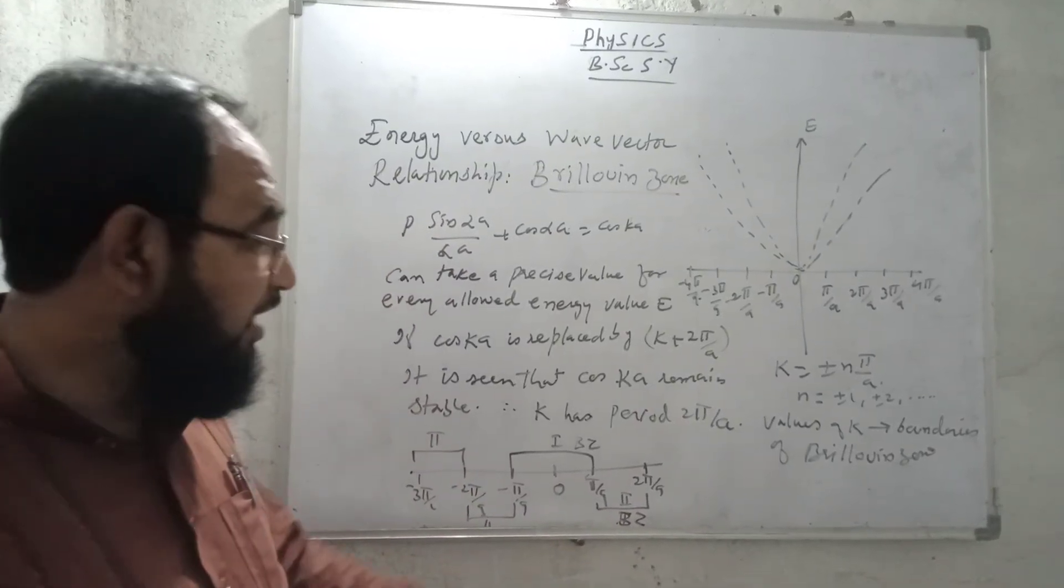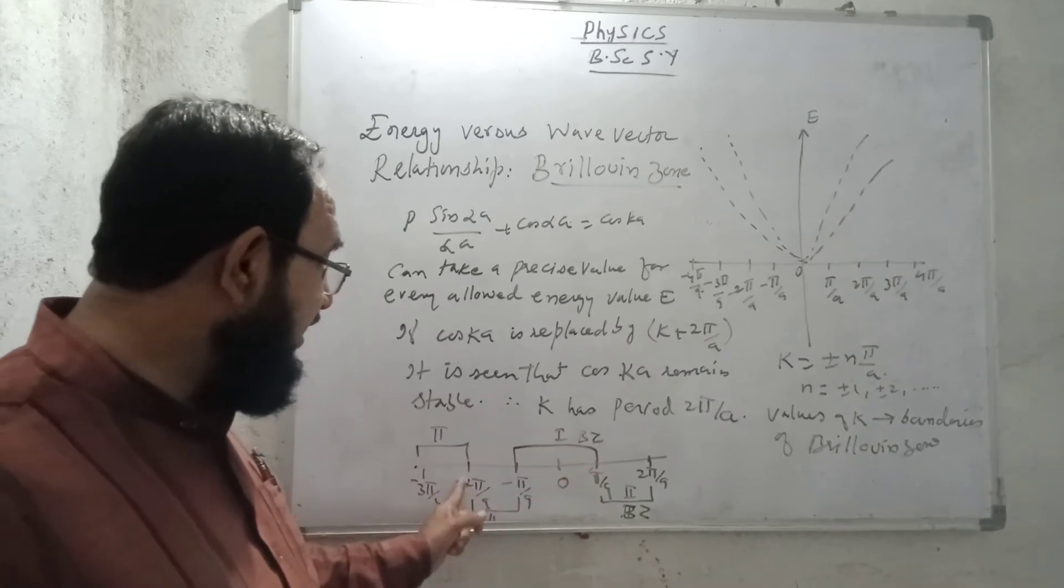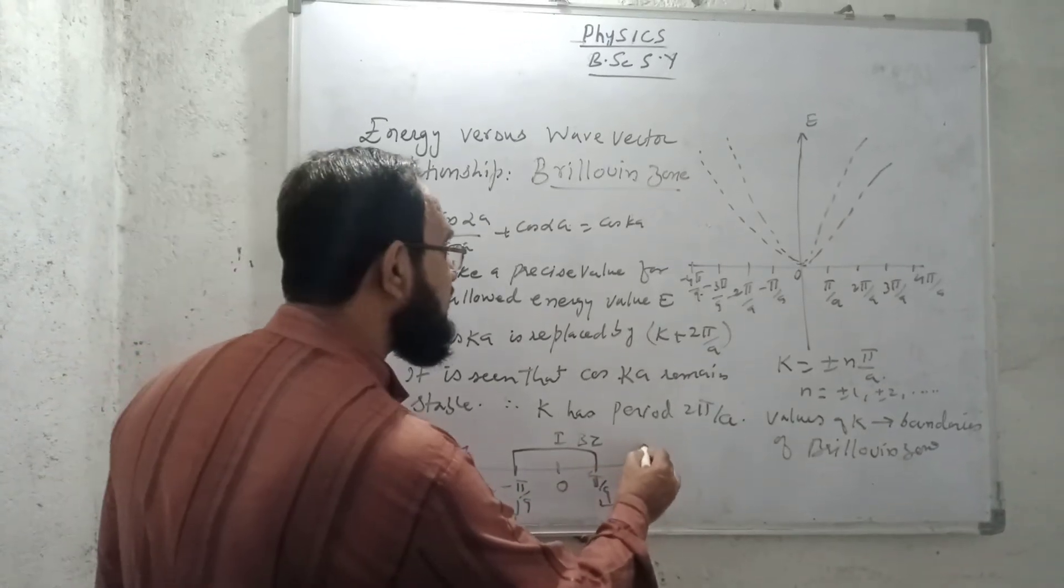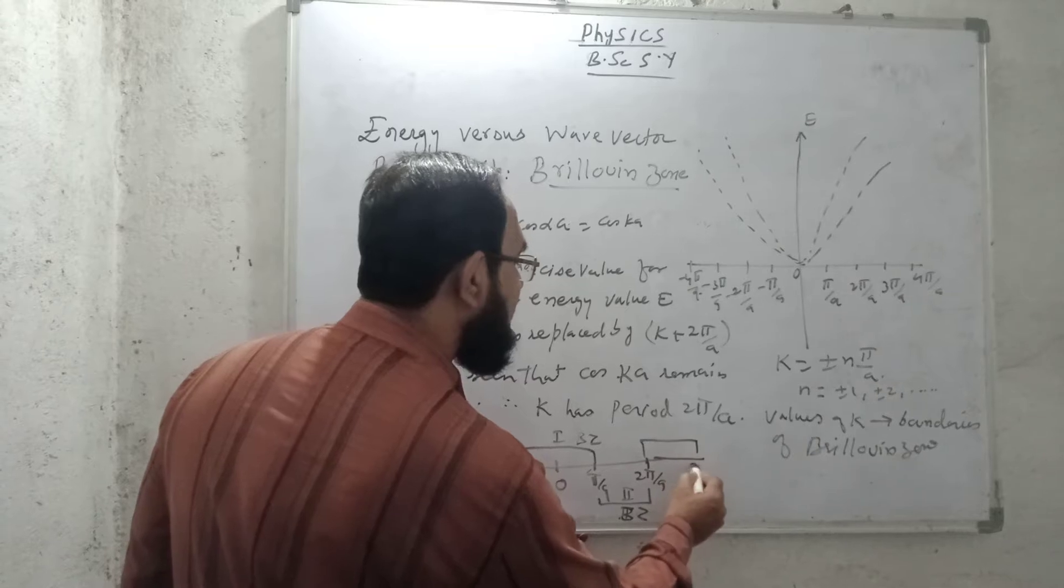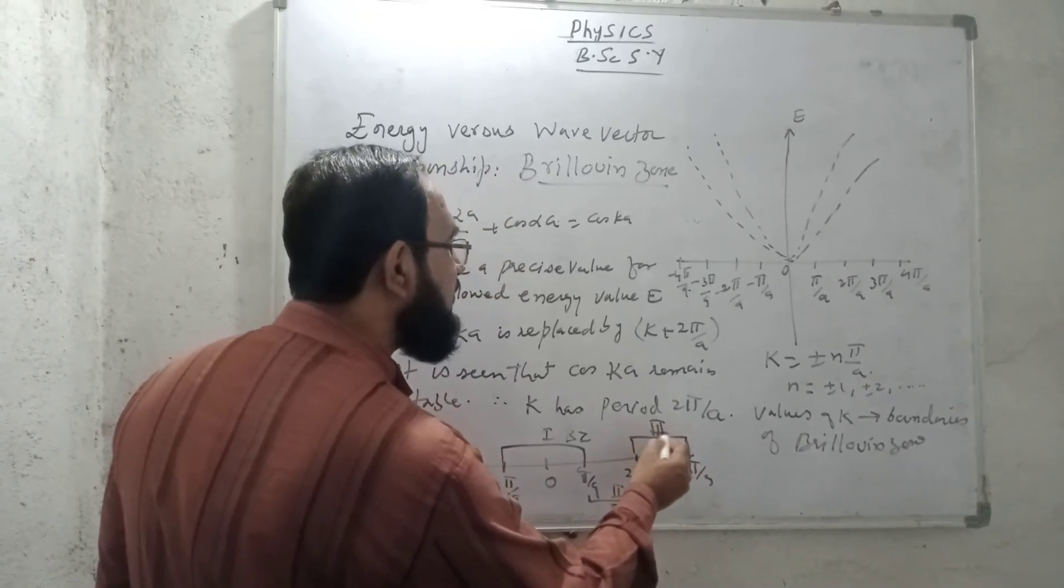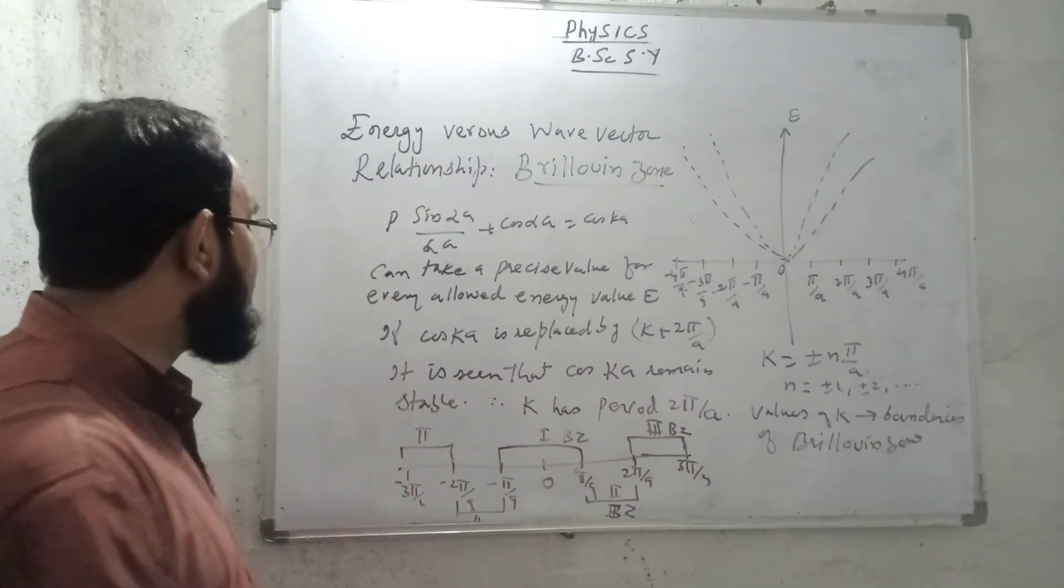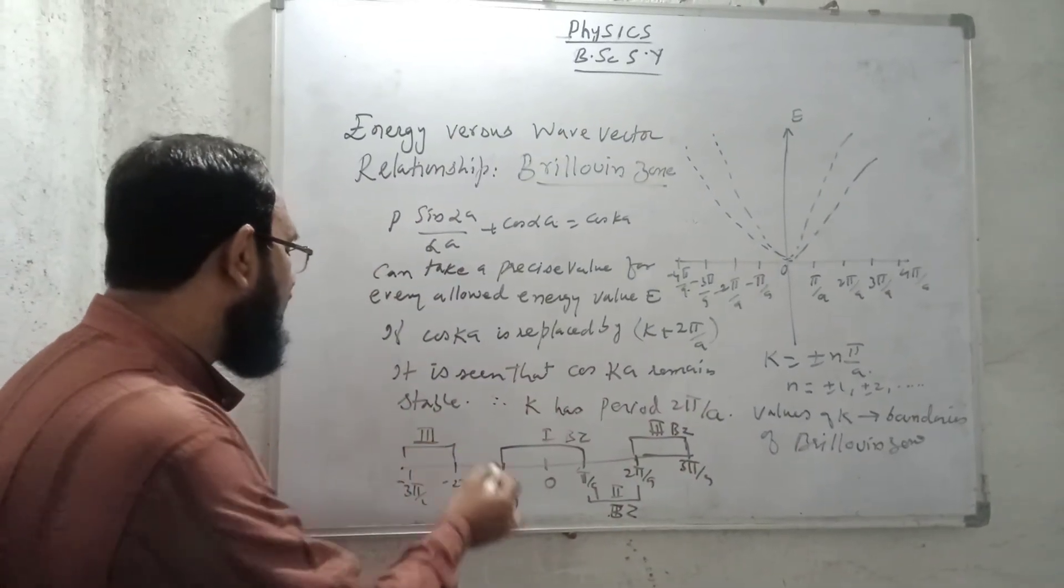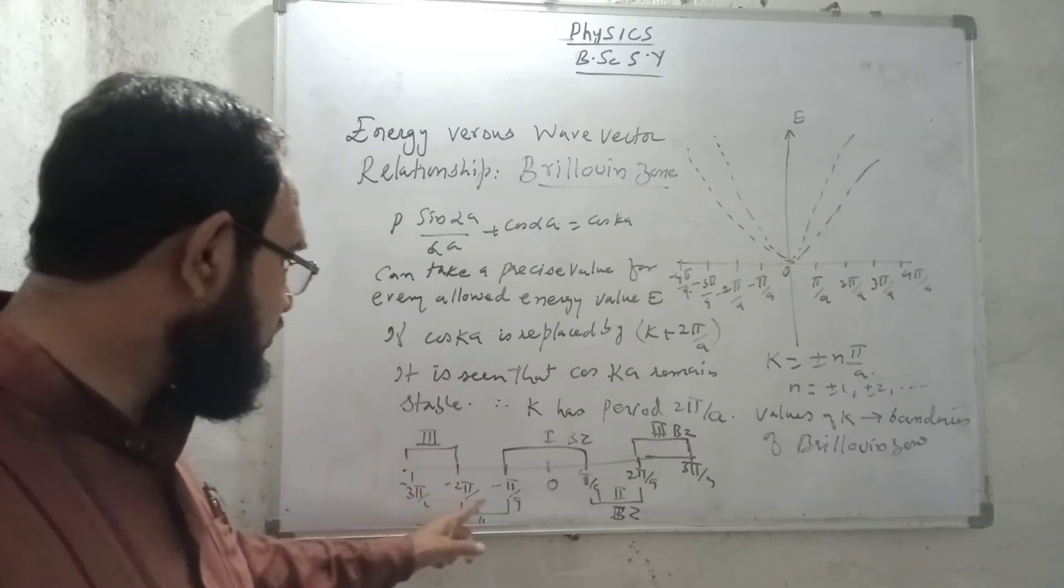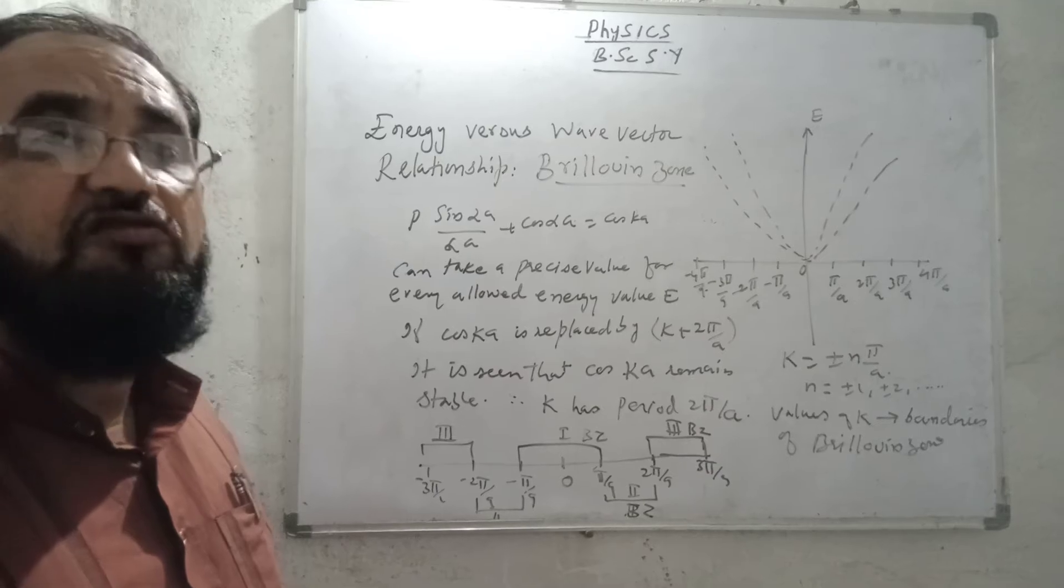Now if I take the value from 2π/A to 3π/A, means from this value to 3π/A, then it is called as the third Brillouin zone on this side, as well as third Brillouin zone on the opposite side, from minus 2π/A to plus 2. So this is the Brillouin zone in the one dimension.